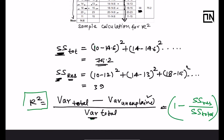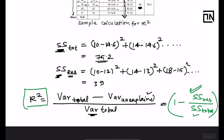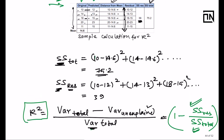Now the formula comes together. R squared equals variance explained divided by total variance. Variance explained equals total variance minus unexplained variance. Dividing by total variance gives: 1 minus (SSR / SST). This is the formula seen everywhere — and it simply requires an original column and a prediction column on training data to compute.